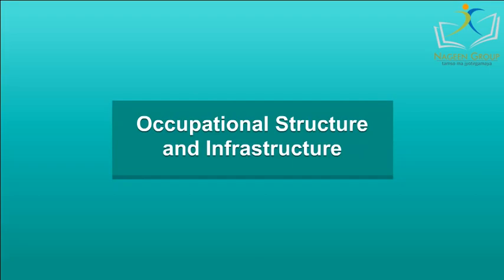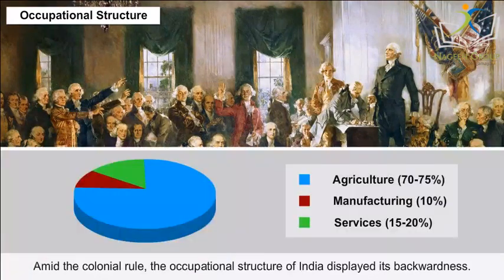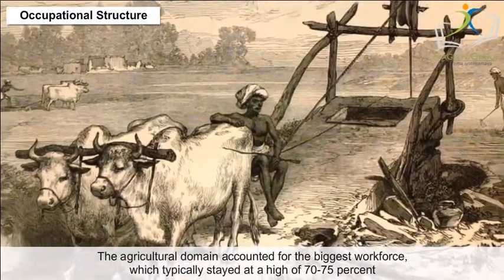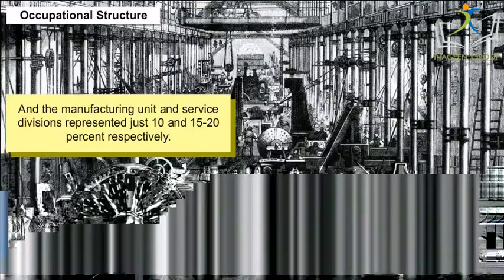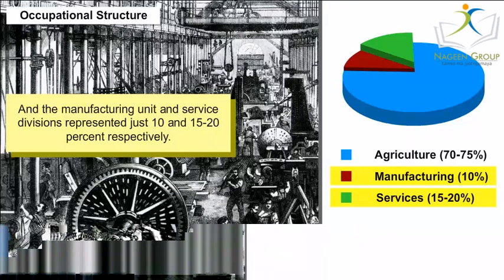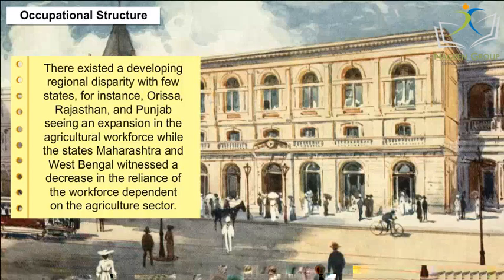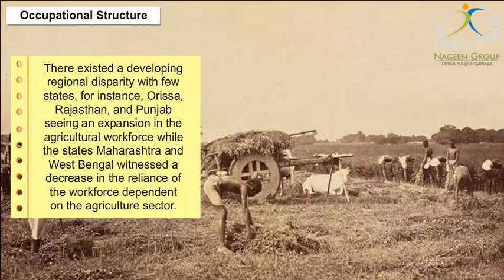Occupational Structure: During colonial rule, India's occupational structure displayed its backwardness. The agricultural sector accounted for the biggest workforce, typically 70 to 75%, while manufacturing and service divisions represented just 10% and 15 to 20% respectively. There was growing regional disparity, with states like Odisha, Rajasthan and Punjab seeing an increase in agricultural workforce, while Maharashtra and West Bengal witnessed a decrease in reliance on the agriculture sector.